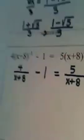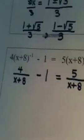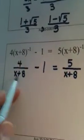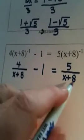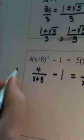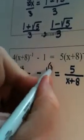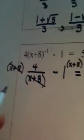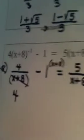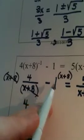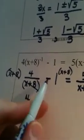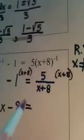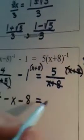Now our next step: I do not want to deal with fractions, and there are three terms here. I want to multiply each term through by x plus 8. Multiplying through by x plus 8 — watch what it's going to do. Here, it's going to make the x plus 8's cancel, leaving me with just 4. That's much prettier. Here, when I multiply negative 1 by x plus 8, negative 1 times x is the opposite of x, and negative 1 times 8 is negative 8. And on this side, the x plus 8's cancel beautifully, leaving me with a 5.